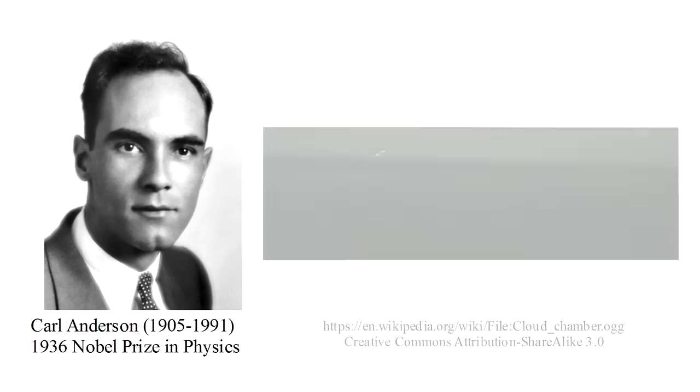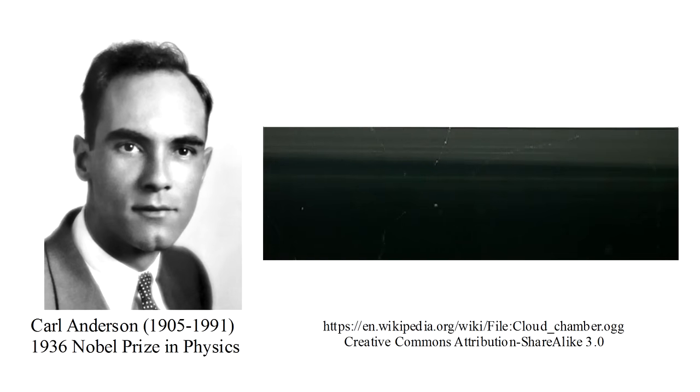In 1932, Karl Anderson was using a so-called cloud chamber to observe cosmic rays. A charged particle traveling through a cloud chamber ionizes molecules along its path. Those ions then cause a supersaturated vapor in the chamber to condense into a visible cloud of droplets. The result is to make the particle's track through the chamber visible.